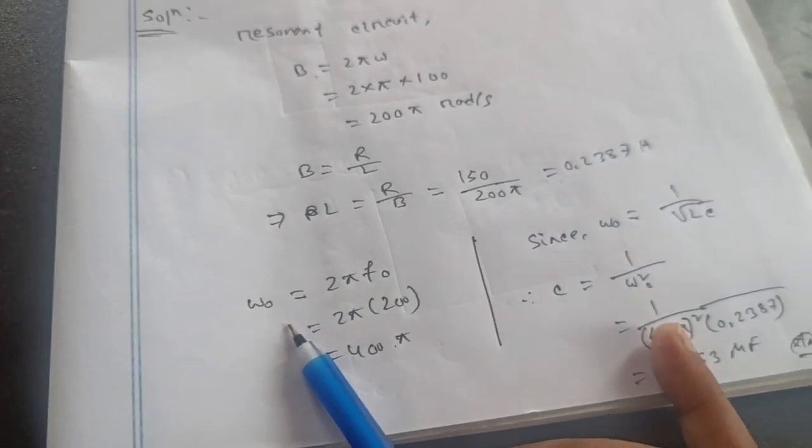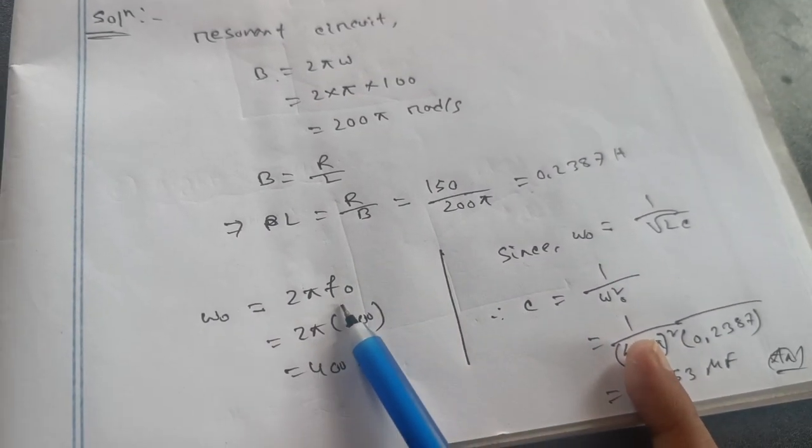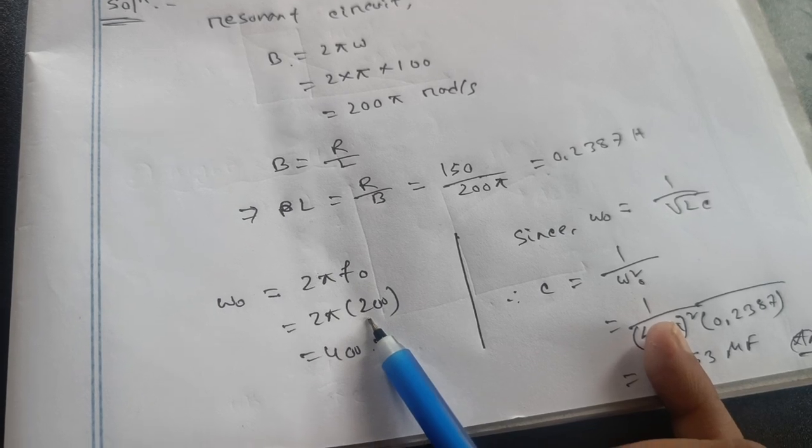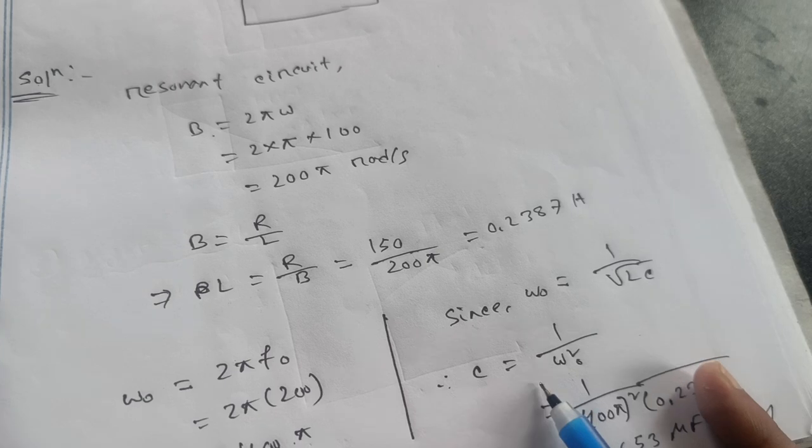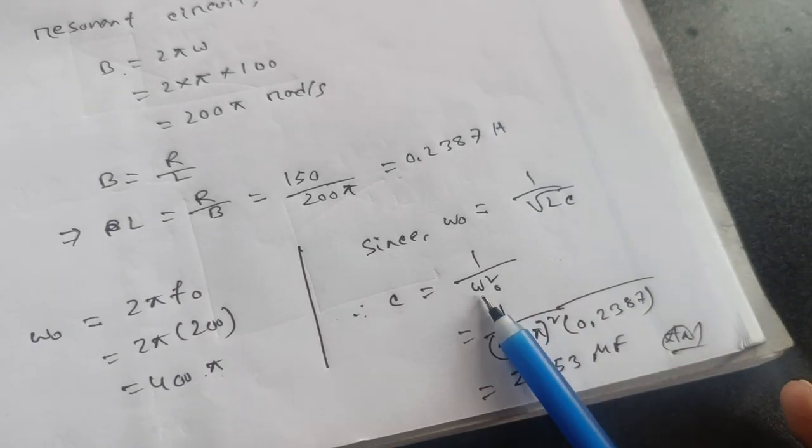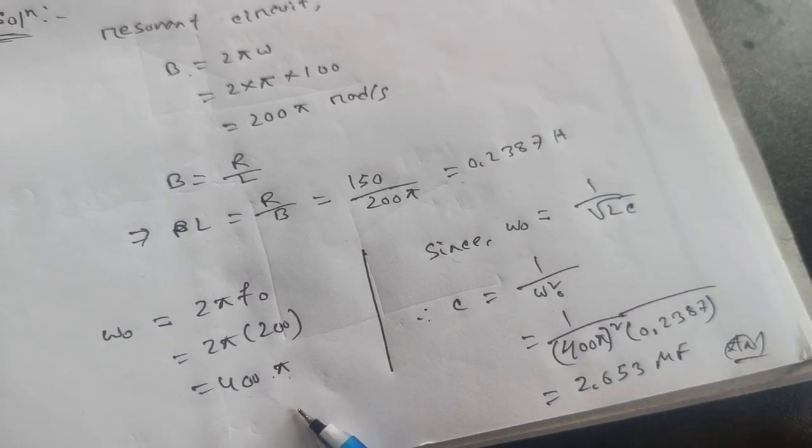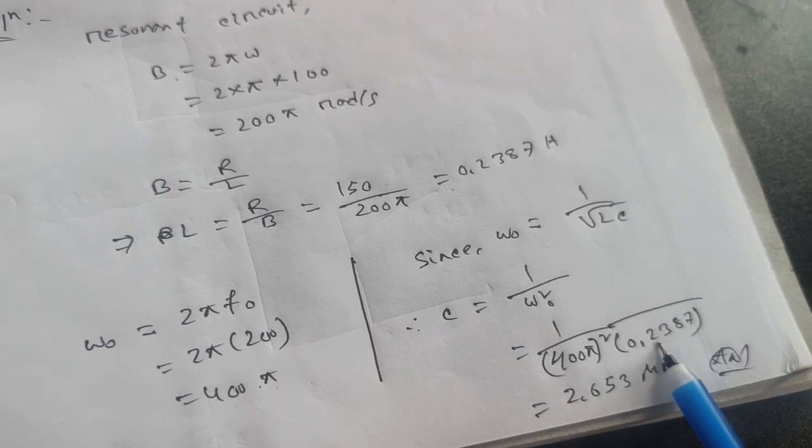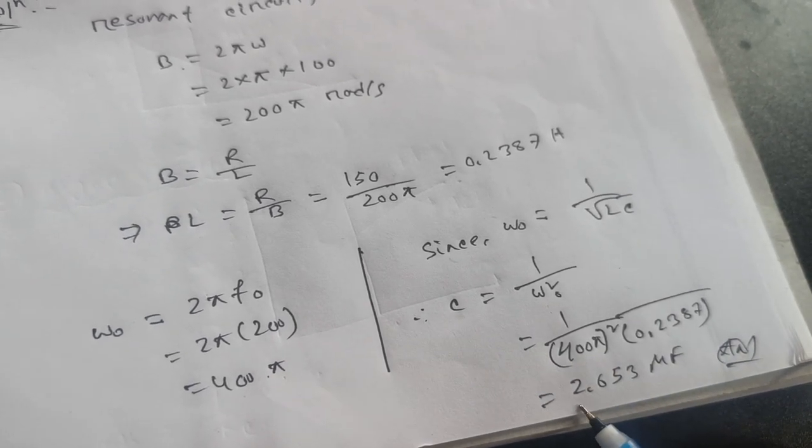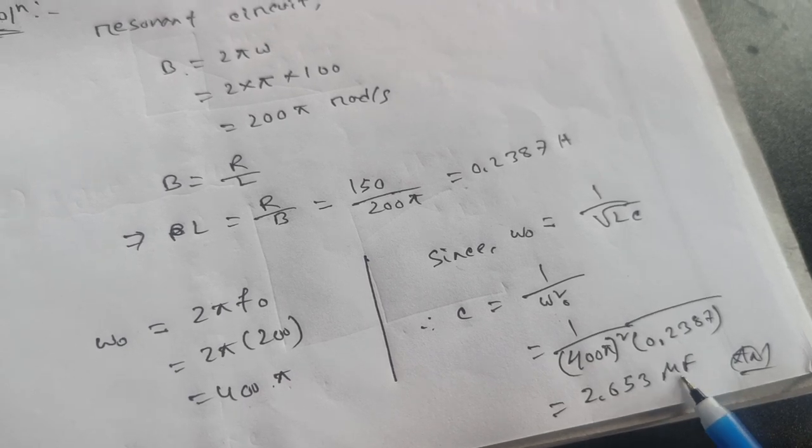Then finally omega 0. Omega 0 is nothing twice pi omega 0. Twice pi omega, omega 200 and 40, 400 pi. That means C, 1 by omega 0. Omega 0, 400 pi whole square is 0.2387 divided by 2.653 microfarad.